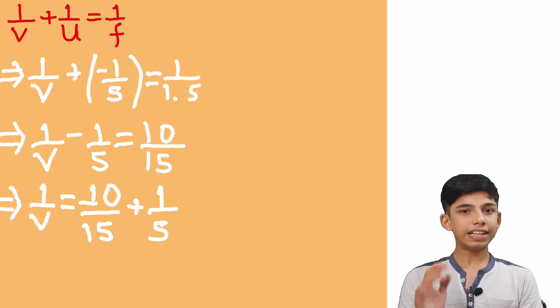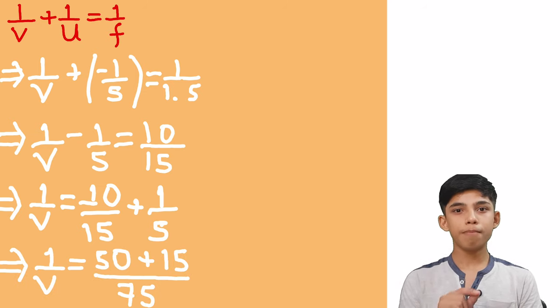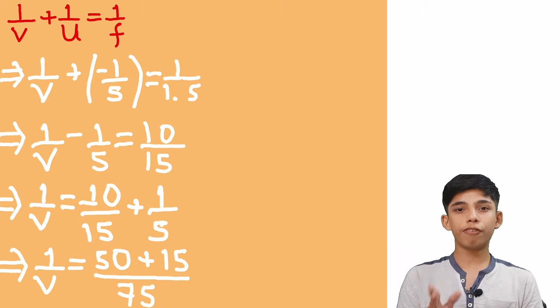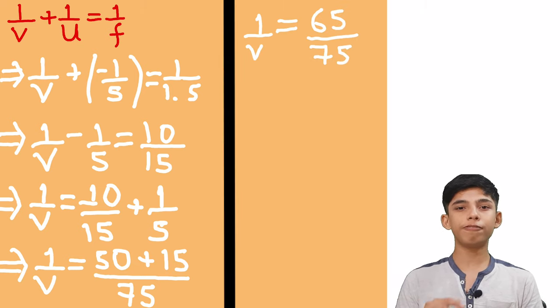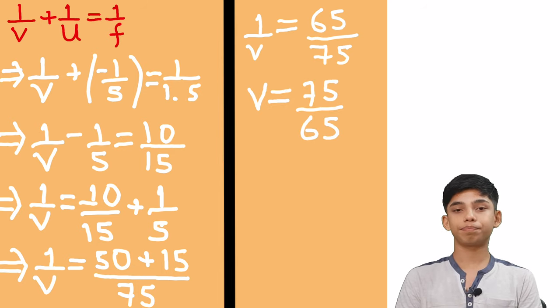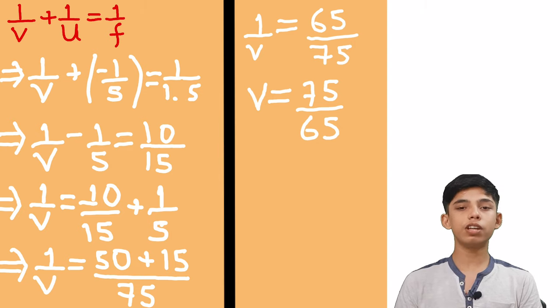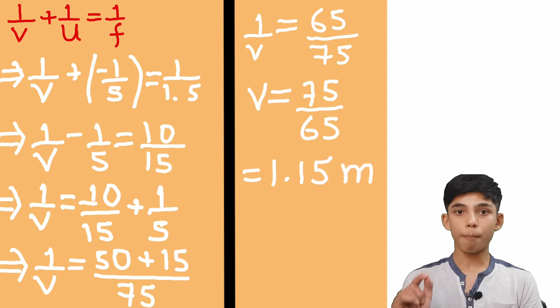Now let's take minus 1 by 5 on the other side and it will become positive. And now let's take the LCM here. So what we will get? Yes, 50 plus 15 by 75, great. So we get the value of 1 by V as 65 by 75. And now let's cross multiply this and we will get the value of V as 75 by 65. And we can also cut this out and get our value as 1.15 meters.